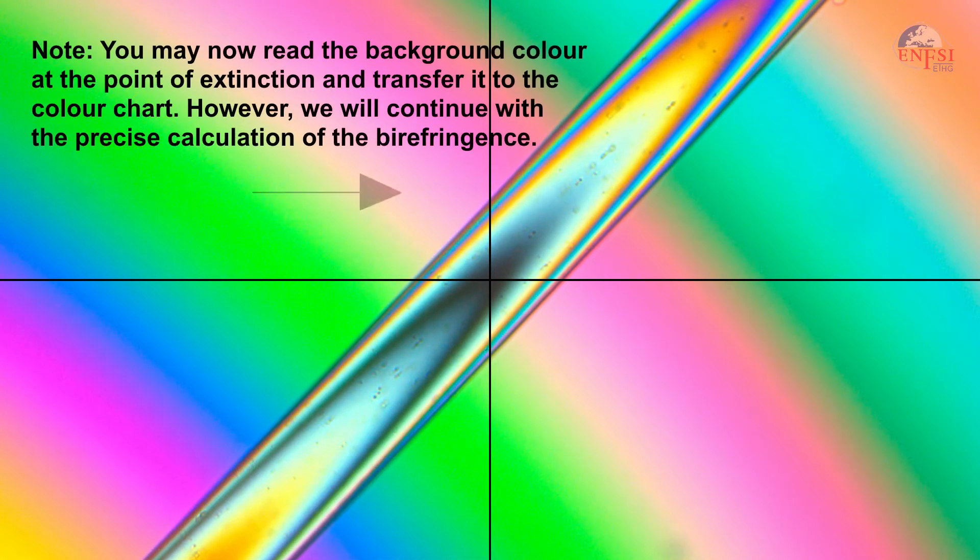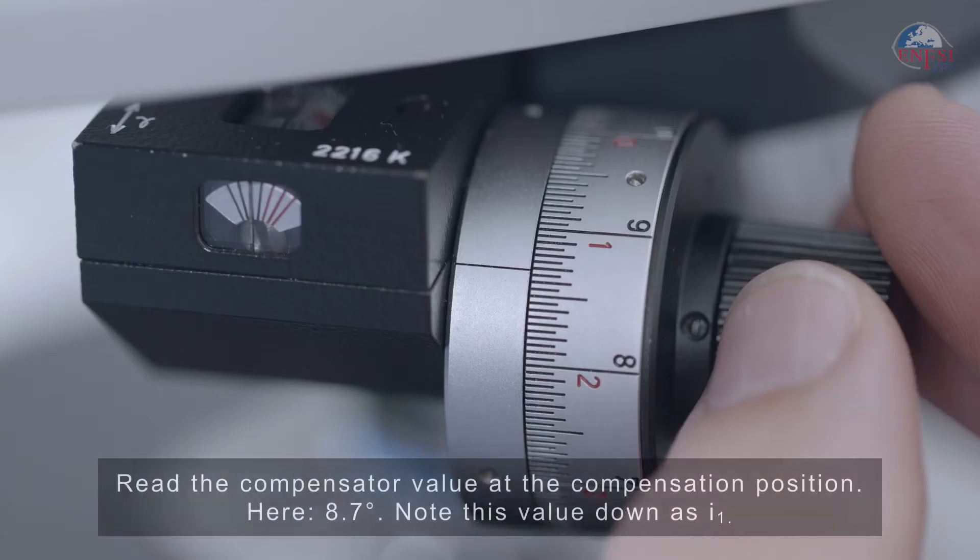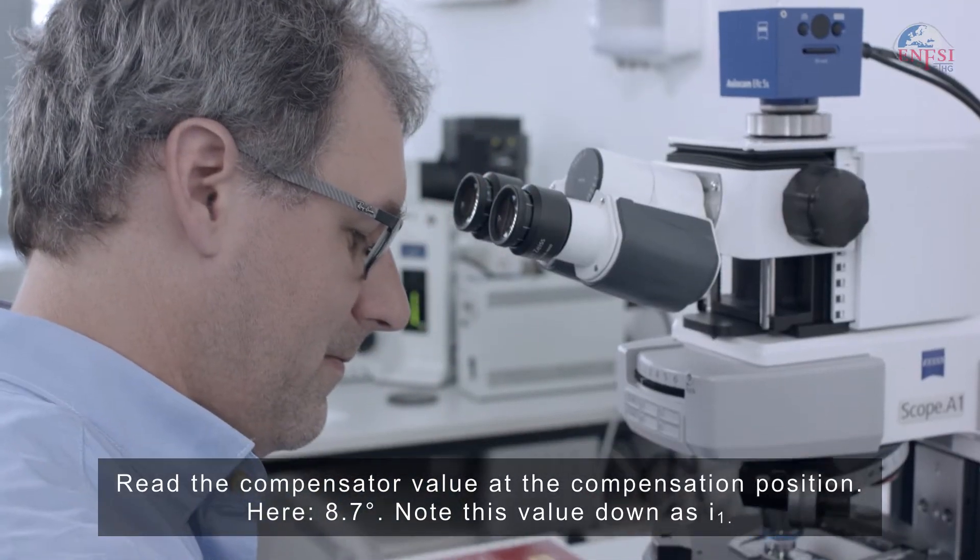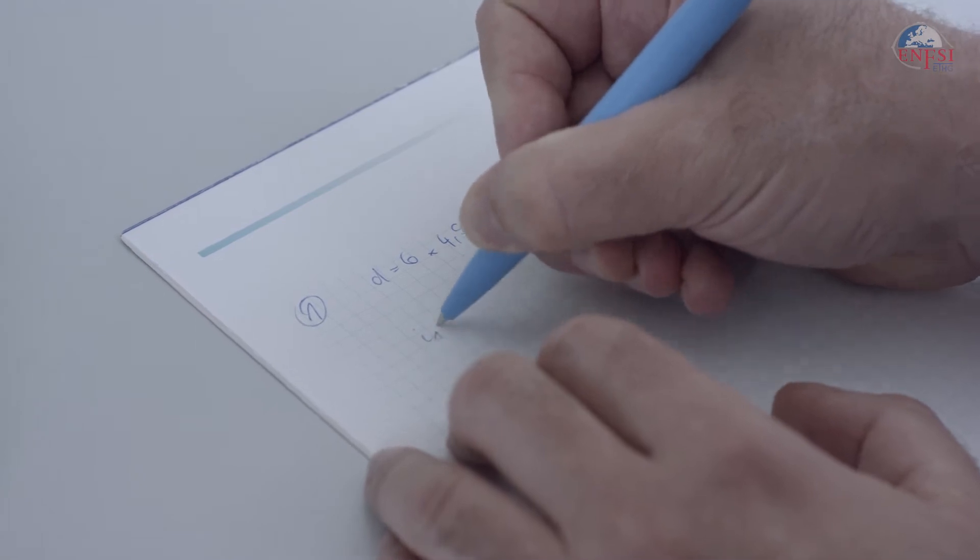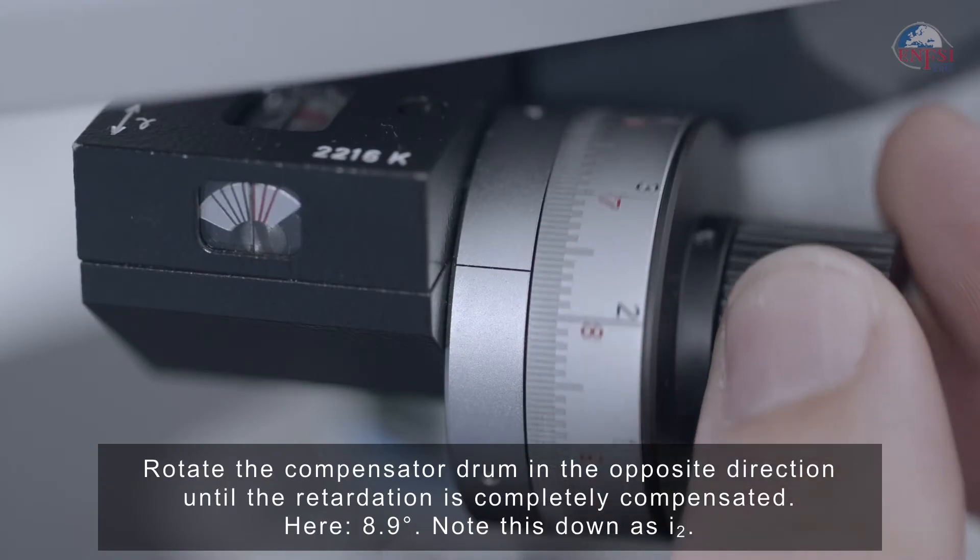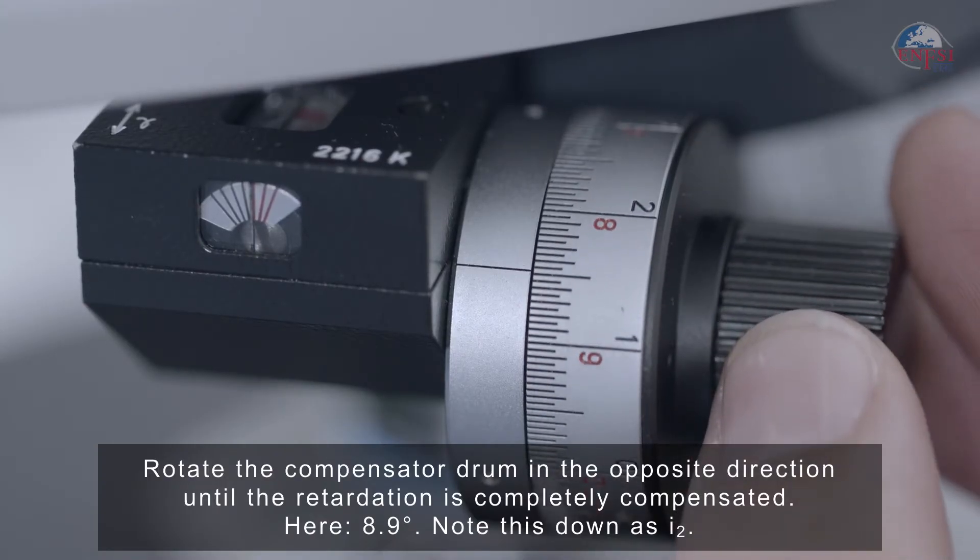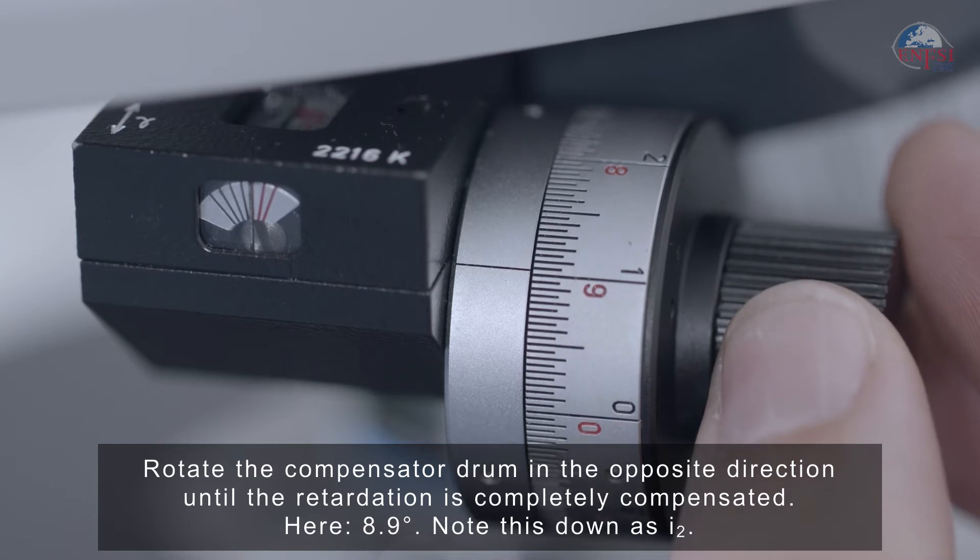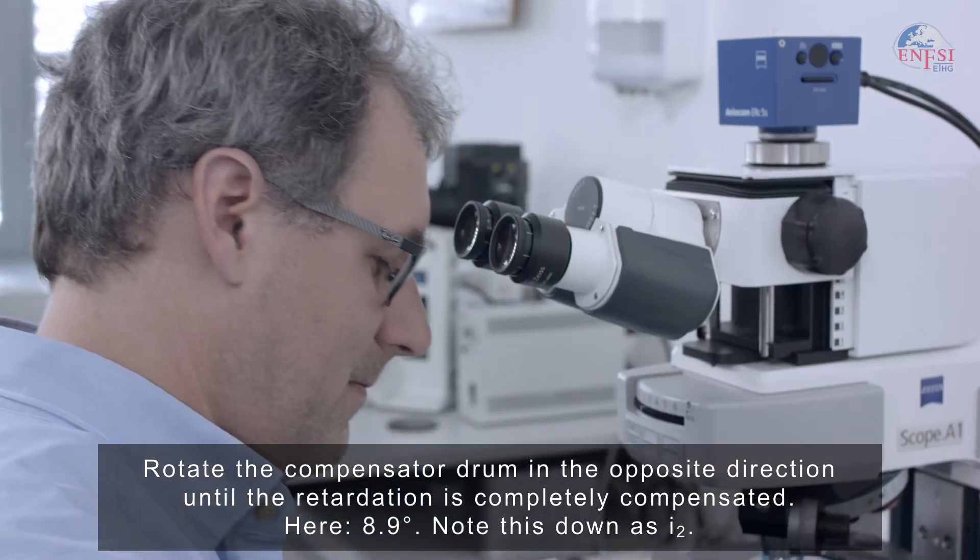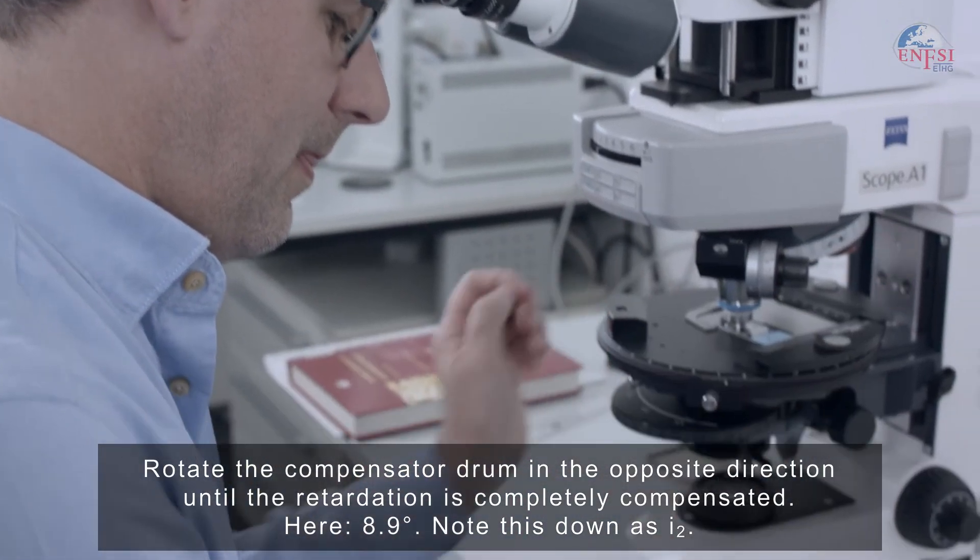You may now also read the background color at the point of extinction and transfer it to the color chart. However, we will continue with the precise calculation of the birefringence. Read the compensator value at the compensation position. Here, 8.7 degrees. Note this value down as I1. Rotate the compensator drum in the opposite direction until the retardation is completely compensated. Here, 8.9 degrees. Note this value down as I2.